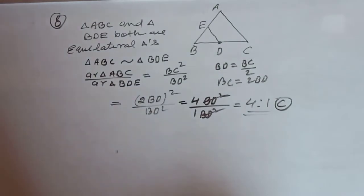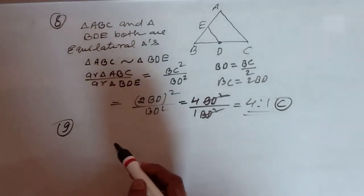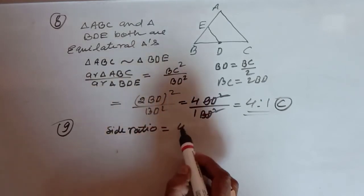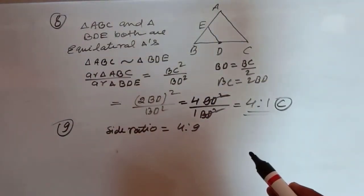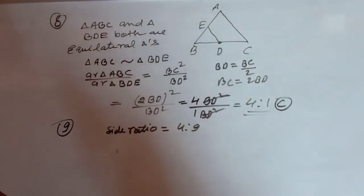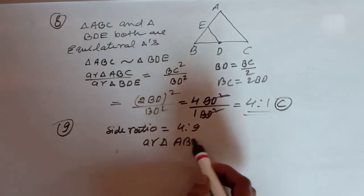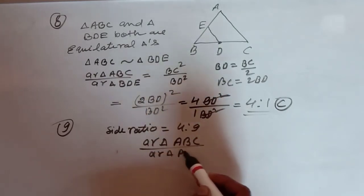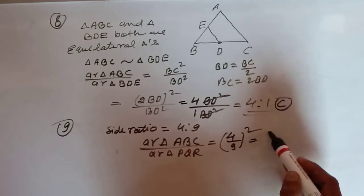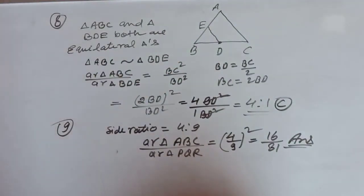Question 9: Sides of two similar triangles are in the ratio 4:9. Find the ratio of their areas. We know that for similar triangles, the ratio of areas = square of the ratio of corresponding sides. So: area △ABC / area △PQR = (4/9)² = 16/81. So the answer to Question 9 is 16:81.